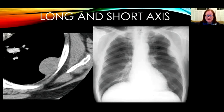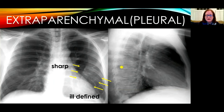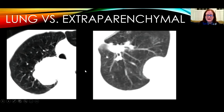Another feature of extraparenchymal or pleural lesions is that they have a distinct long axis and short axis, as seen here in a left chest wall lesion — another patient with plasmacytoma. On the other hand, lung lesions tend to have similar axes and a round shape, as seen in this patient with multiple metastatic nodules and masses. Pleural lesions sometimes have a sharp edge on one side and fade away on the other, as in this patient with a pleural lipoma that is difficult to see on the lateral view. Lung lesions tend to replace and destroy the lung parenchyma, whereas pleural and extraparenchymal lesions tend to push away and displace lung parenchyma.